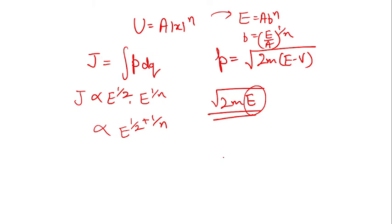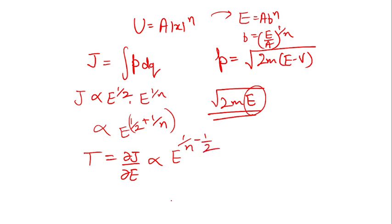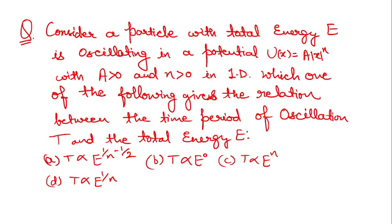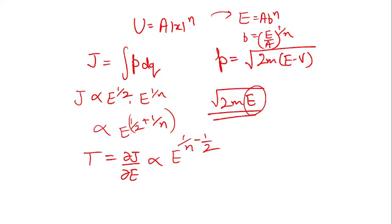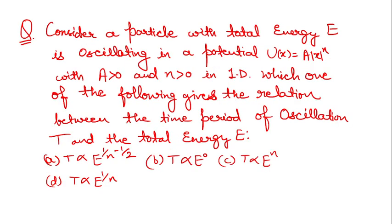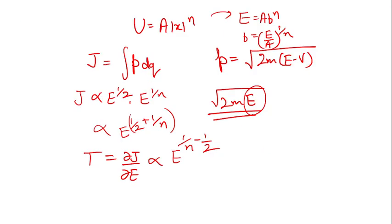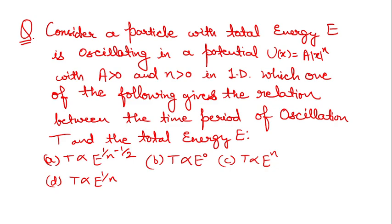Combining both contributions, J ∝ E^(1/2 + 1/n). The time period is then T = ∂J/∂E, which upon differentiation gives T ∝ E^(1/n − 1/2). This is option A, the correct answer. That's how you can quickly and easily solve any such question in your exams, and you'll be able to relate this trick to other similar concepts too.